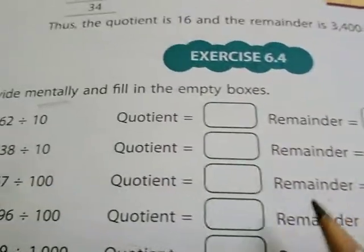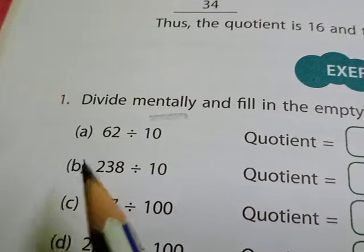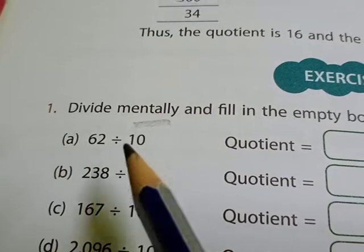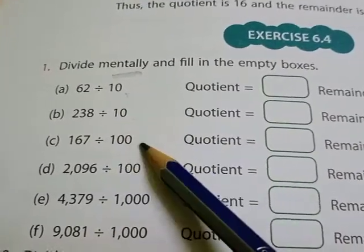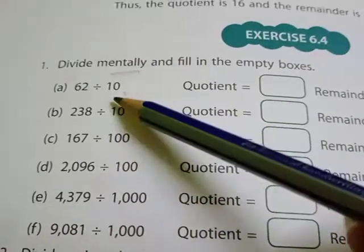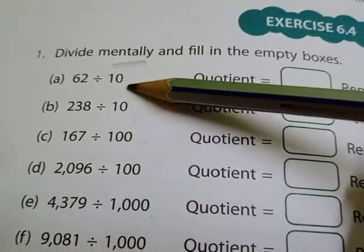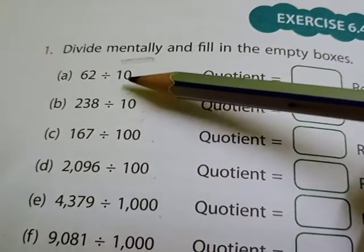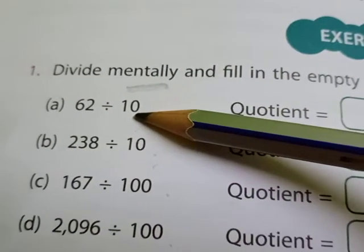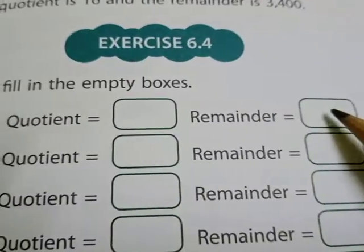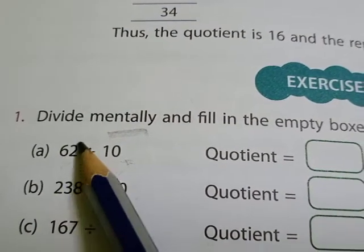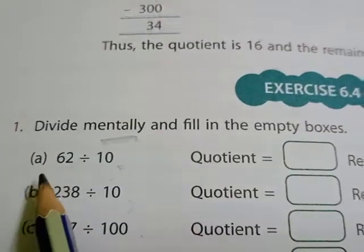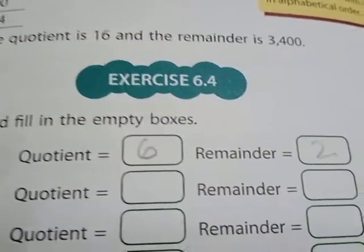I'll tell you how to divide mentally. For dividing mentally, look at the divisor. The divisors given here are 10, 10, 100, 100, 1000, and 1000. If the divisor is 10 — that means one zero — then from the given dividend, the last one digit goes into the remainder, and the rest is your quotient.